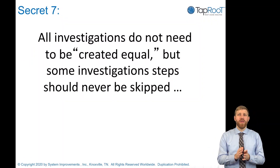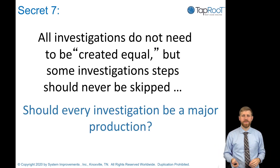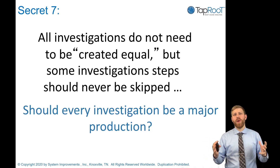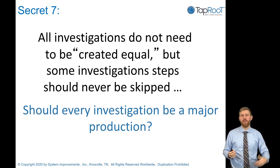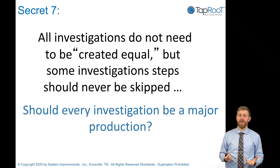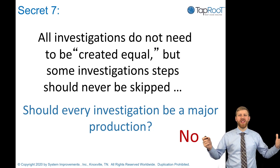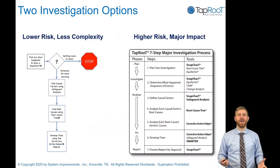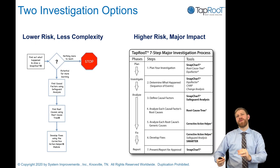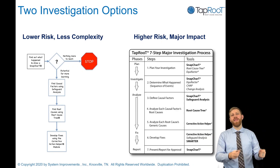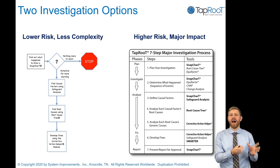Secret number seven: all investigations do not need to be created equal, but some investigation steps should never be skipped. Should every investigation be a major production? Do you need a cross-functional team on every investigation? Do you need to report up to the VP for every accident? In Taproot, we give you two investigation options: the seven-step major investigation process for higher-risk, major-impact investigations, and the Taproot essentials process for low-to-medium risk, less complex situations.